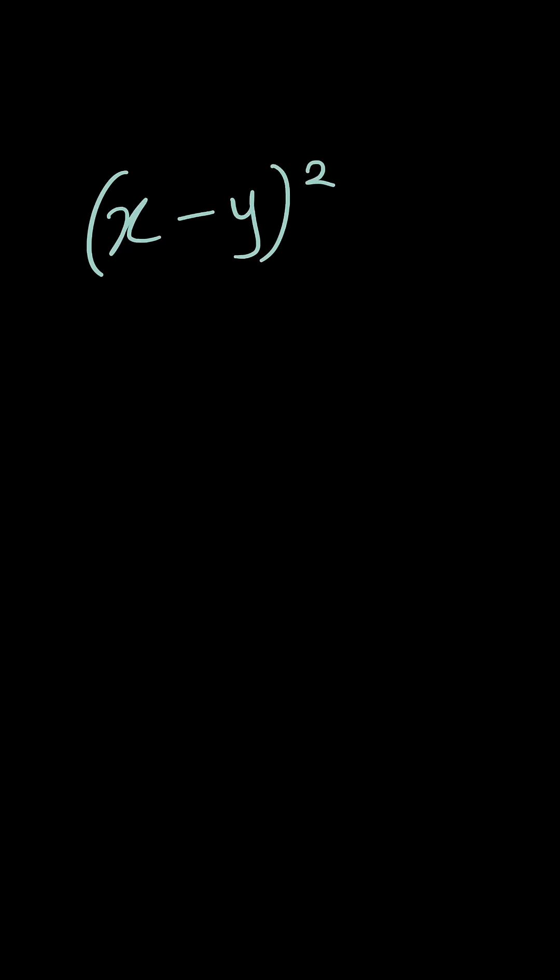Let me show you the simplest way to solve this question. So we have (x - y)². Now there are different methods, but this is the simplest approach. Since we have (x - y)², it means it is multiplying itself twice, so we can rewrite that as (x - y)(x - y).